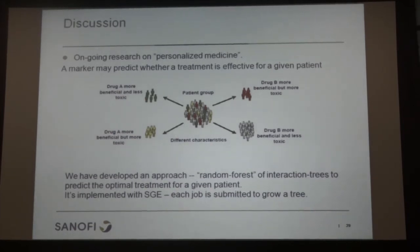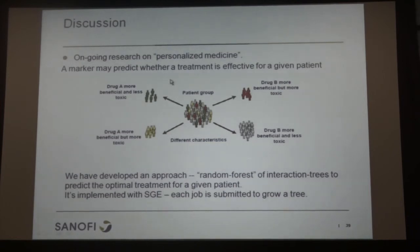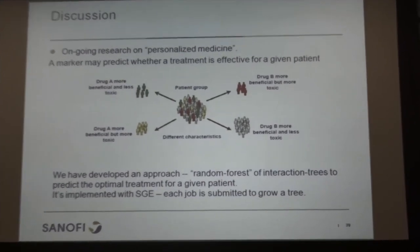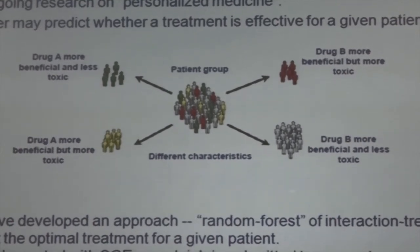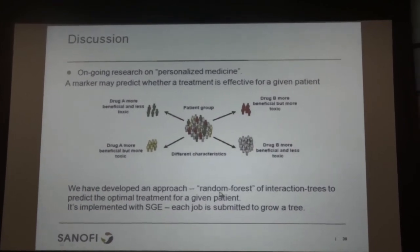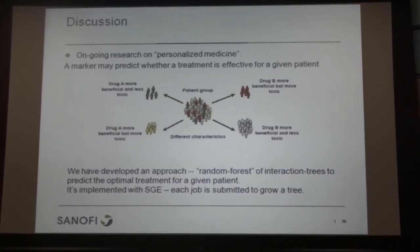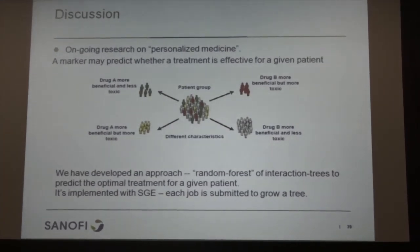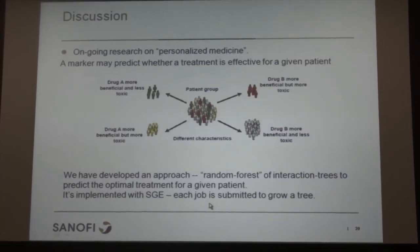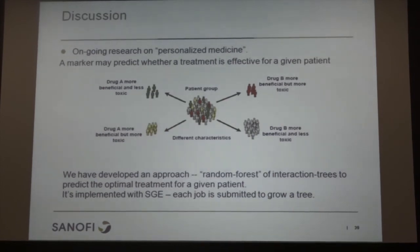Some ongoing research on personalized medicine: a drug doesn't work for all patients — it benefits a proportion, and for a given patient treatment A might work better than treatment B, while for another patient the decision might be reversed. The goal is to identify the optimal treatment for each individual. We developed an approach adapted from the random forest idea, modifying the tree to include treatment information — an interaction tree — to predict the optimal treatment. It's implemented on the SunGrid Engine, where each job grows an independent tree, and all trees are bagged into a random forest.